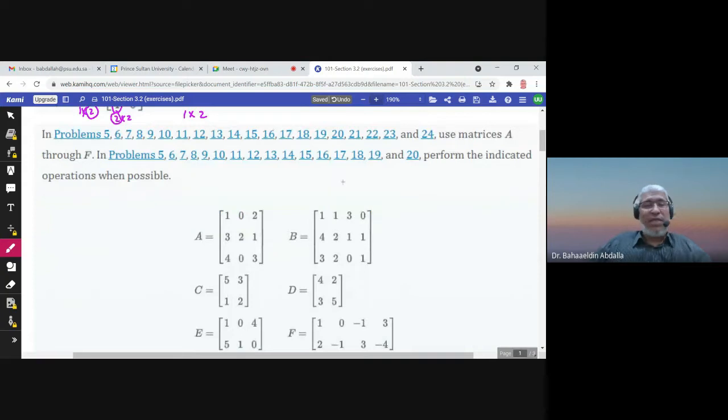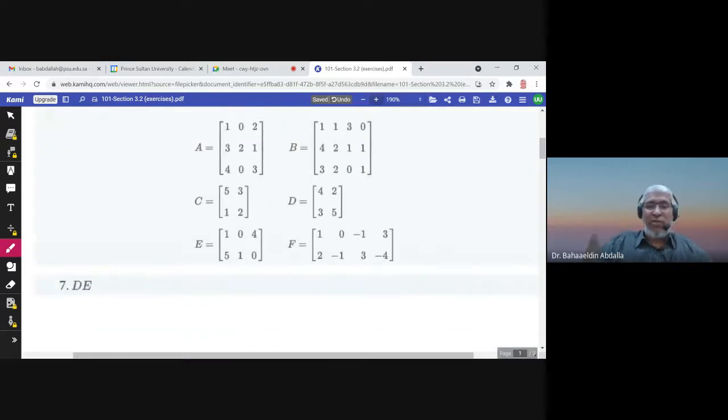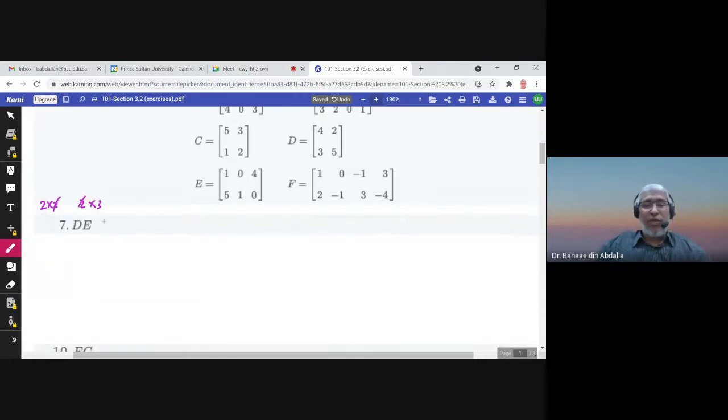Use matrices A through F. Perform the indicated operation when possible. D times E. D is 2 by 2, multiplied by E, which is 2 by 3. Can we? Yes. And the product would be 2 by 3.